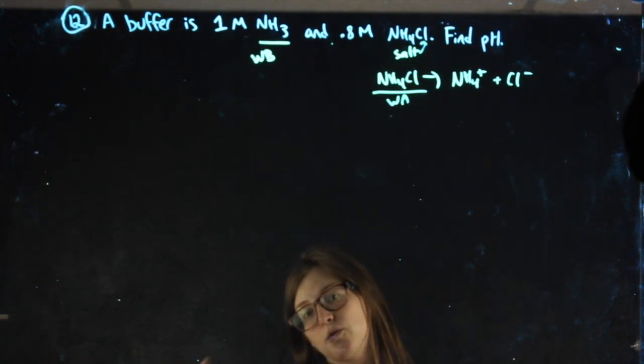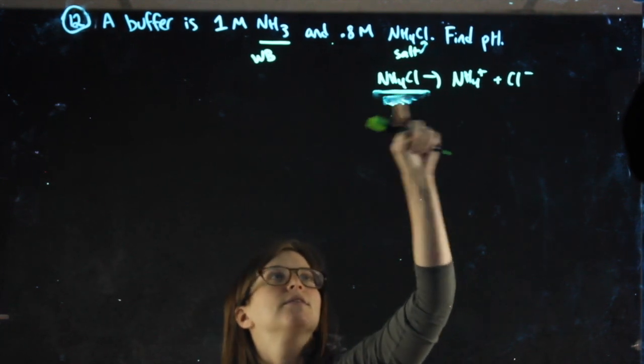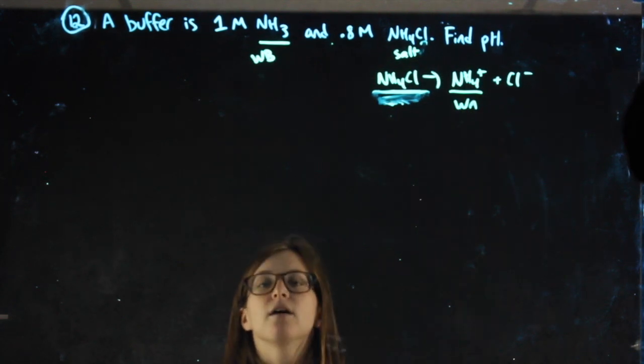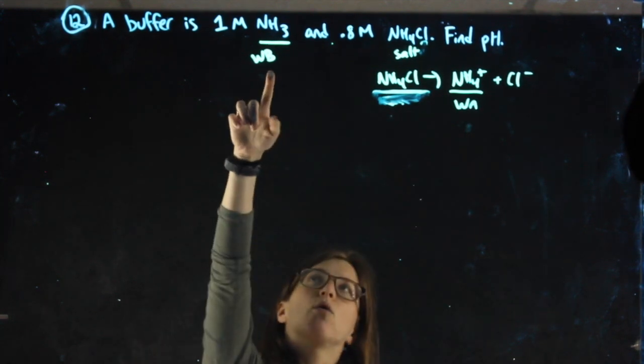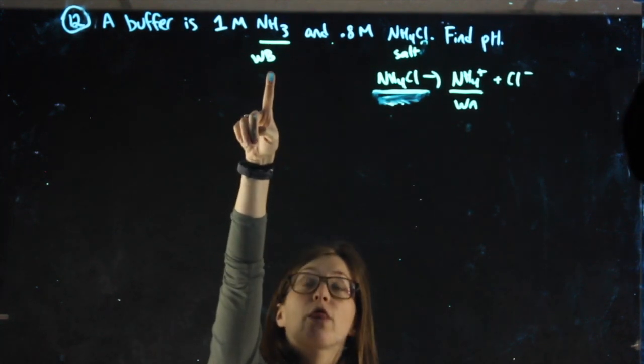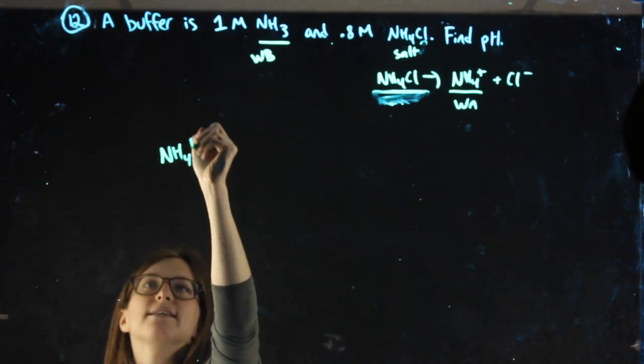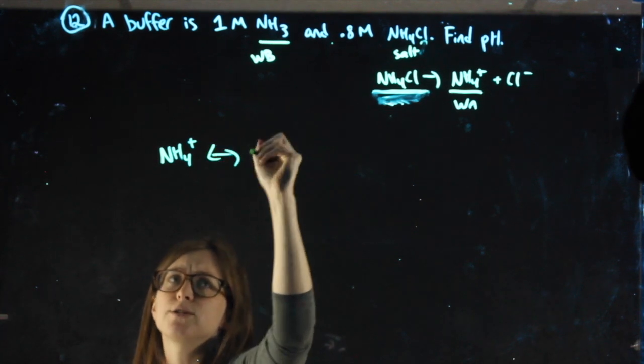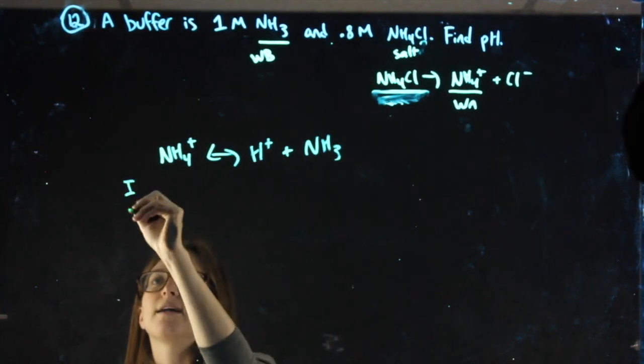From here I can either do a weak acid problem using NH4 or a weak base problem using NH3. I'm going to do a weak acid problem. I take my weak acid, not the salt, but the weak acid. I dissociate it, meaning an H falls off, and I set up my ICE chart.